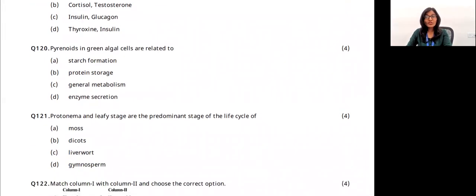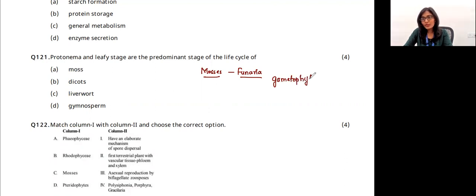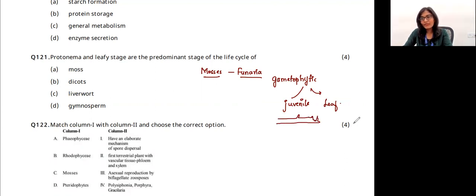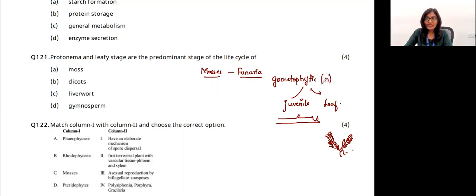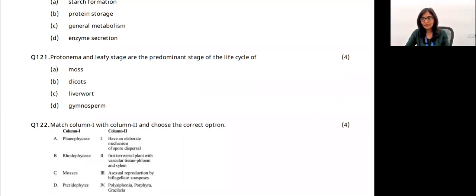Question 26: protonema and leafy stage are found in which group? In mosses like Funaria, the dominant phase is gametophytic, which has two stages: a juvenile stage (protonema) and a leafy stage. The leafy stage has root-like, leaf-like, and stem-like appearances but they are not true organs. This gametophytic (haploid) dominant stage is seen only in mosses, not in liverworts, gymnosperms, or angiosperms. The answer is option A.